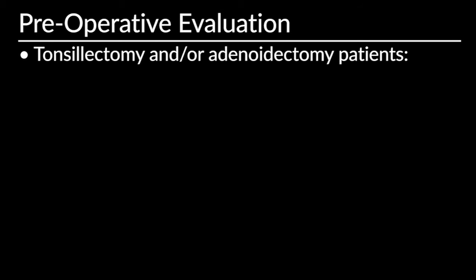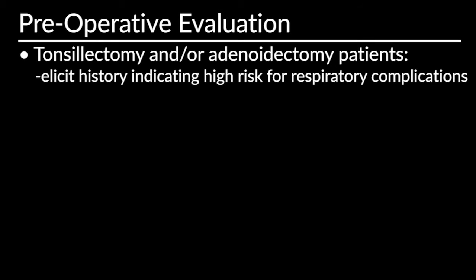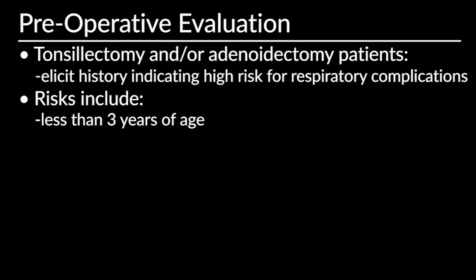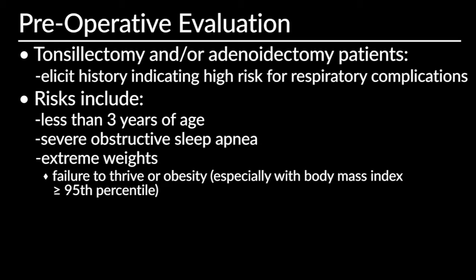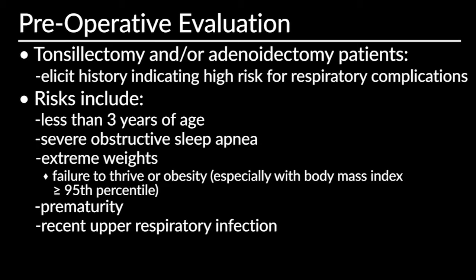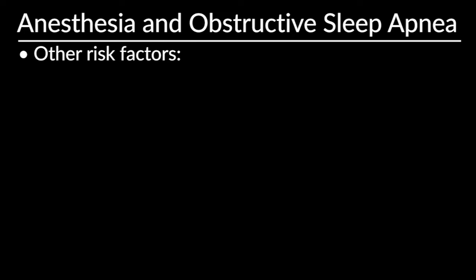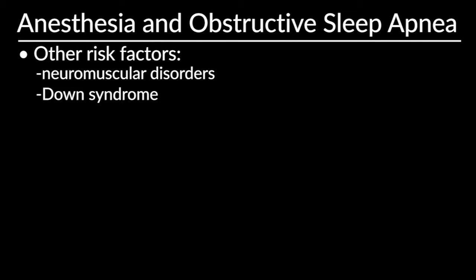When you're doing the preoperative evaluation for patients having a tonsillectomy and/or adenoidectomy, try to elicit any history that would place your patient at higher risk for postoperative respiratory complications. This would include age less than three years, severe obstructive sleep apnea, extremes of weight such as failure to thrive or obesity — especially with a body mass index in the 95th percentile or greater — prematurity, a recent upper respiratory infection (in which case you may choose to postpone surgery), reactive airway disease, as well as neuromuscular disorders, Down syndrome, and craniofacial abnormalities.